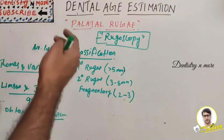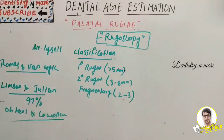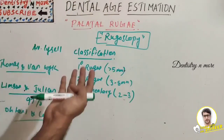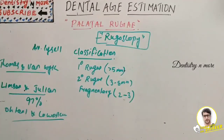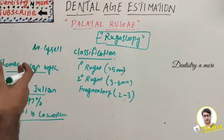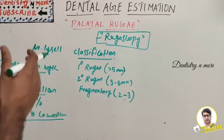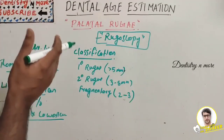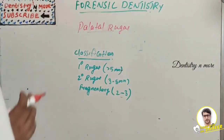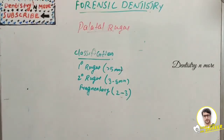Finally, the palatal rugae pattern is unique to human beings, just as fingerprints are, so its use in forensic identification is fairly justified. Analysis of palatal rugae pattern combined with other methods is an important alternative and complementary technique for human identification, providing a significant contribution in criminal investigations. That concludes the topic of palatal rugae in forensic dentistry. The next session will be on the role of third molars in dental age estimation.